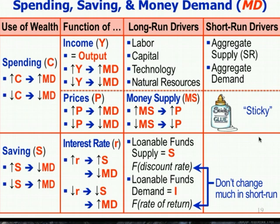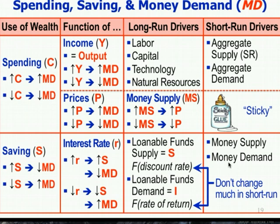In the short run, those things — the value of tomorrow versus today — don't really change much. The general economy's consumers' value of future versus current spending doesn't change much in the short run. And the rate of return on investment is really driven by long run expectations. So these things do change, but not much. When interest rates go up and down in the short run, it's not really because of changes in people's discount rate or expected rate of return — instead, as we'll see, it's driven by money supply and money demand.